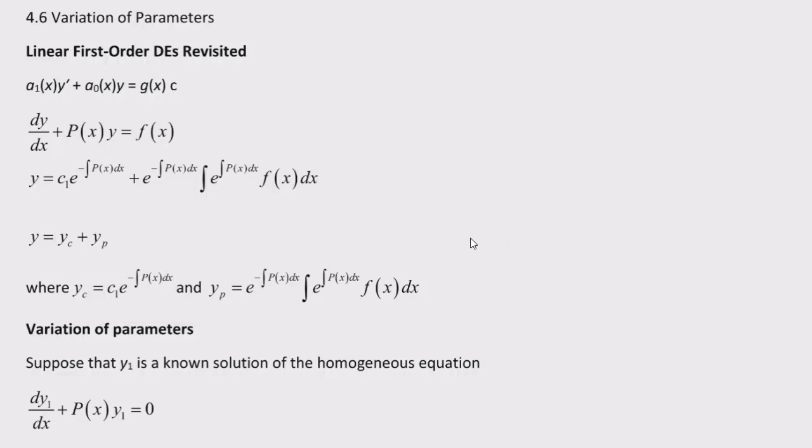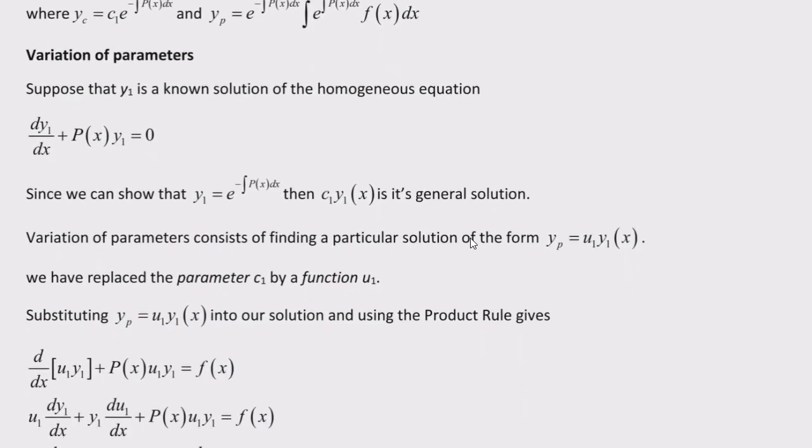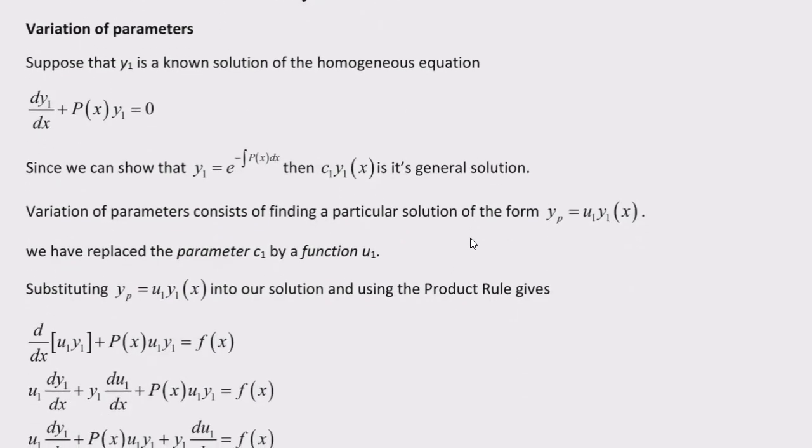So just a quick review of that. We also had the idea of variation of parameters, and this is kind of the use substitution idea where the product rule ends up making it a little bit easier for us.